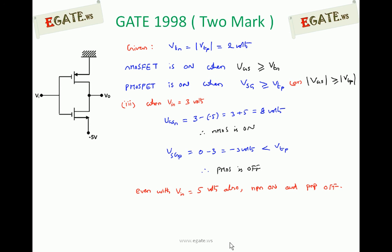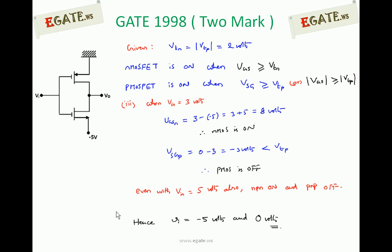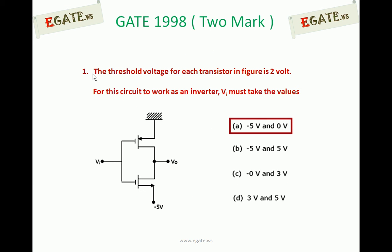Out of the four cases, we have two distinct situations: N-MOS on with P-MOS off, and N-MOS off with P-MOS on. However, the circuit's power supplies are 0 volts and minus 5 volts, so we cannot apply more than 0 volts or less than minus 5 volts as input. The input must be compatible with the power supply, meaning input must be between minus 5 volts and 0 volts. Therefore, the correct option is A: minus 5 volts and 0 volts, making this circuit act as an inverter.